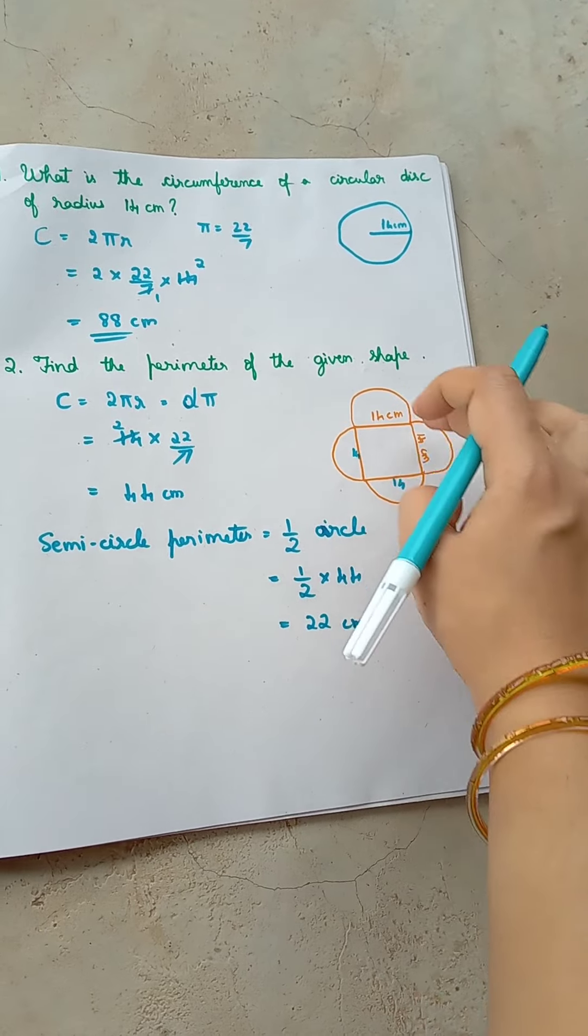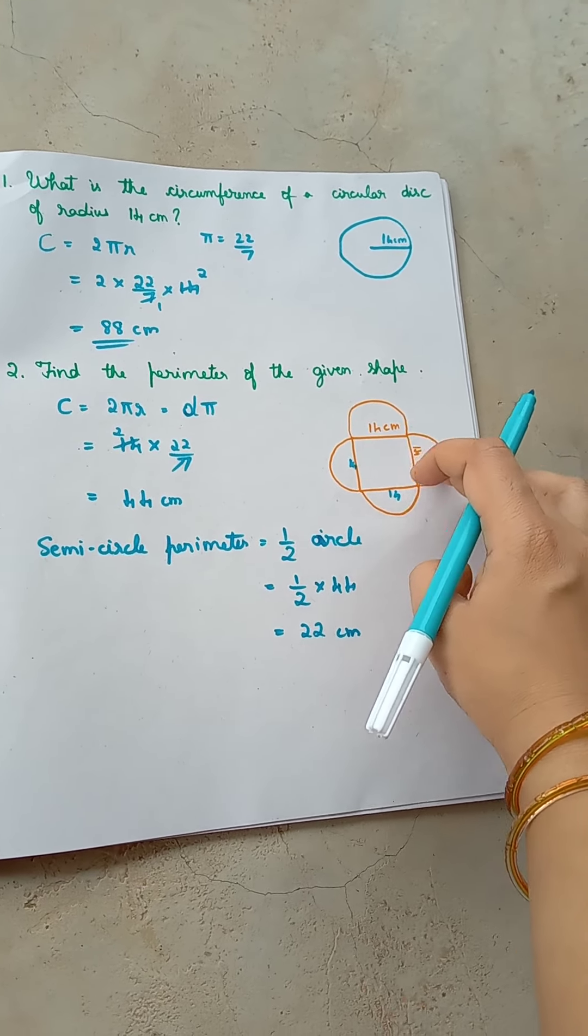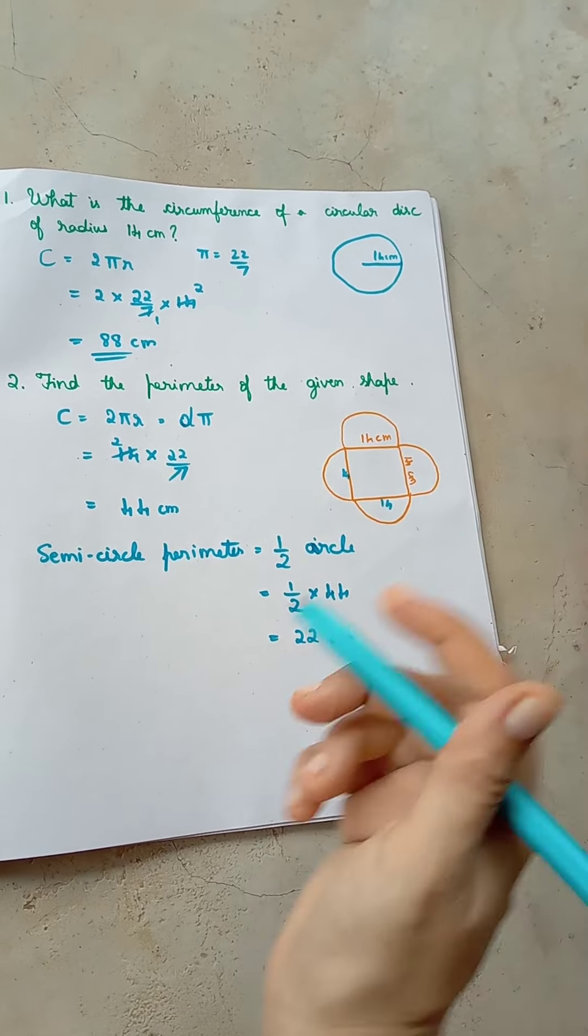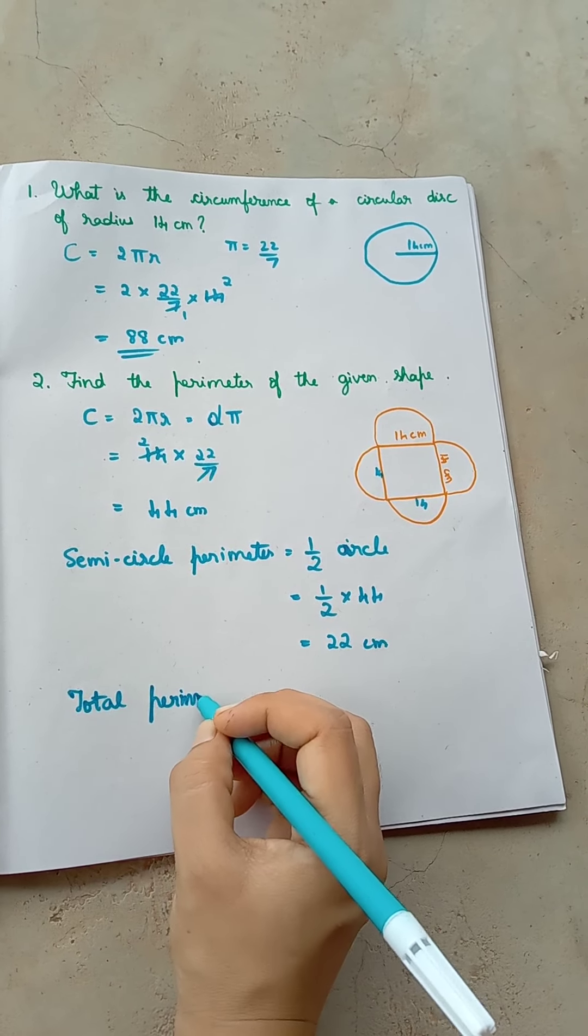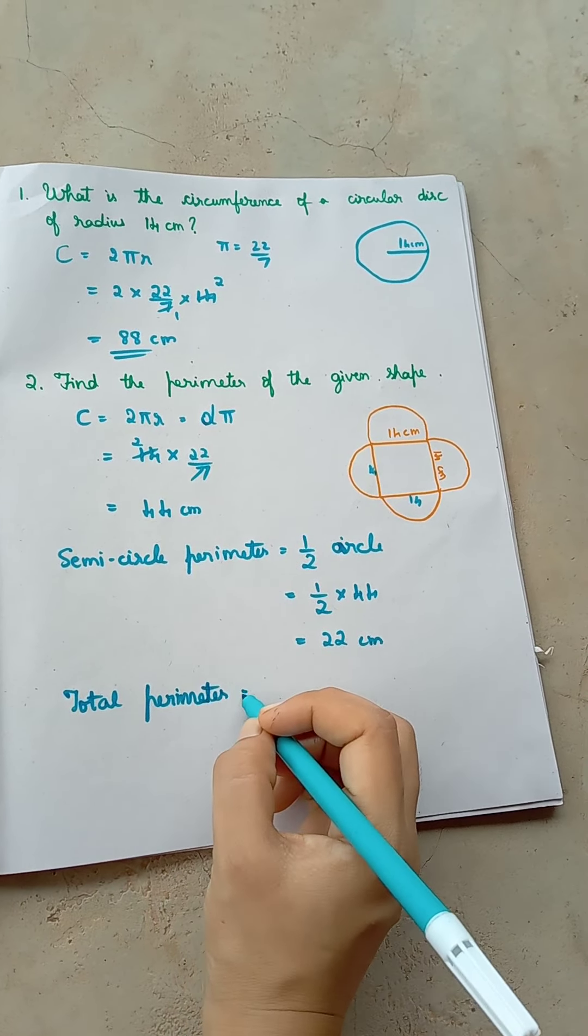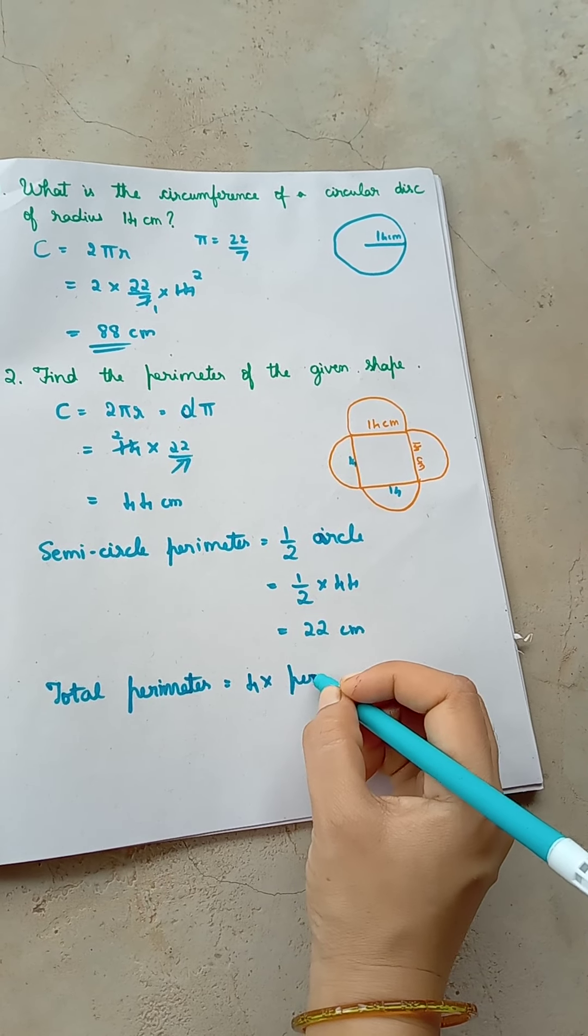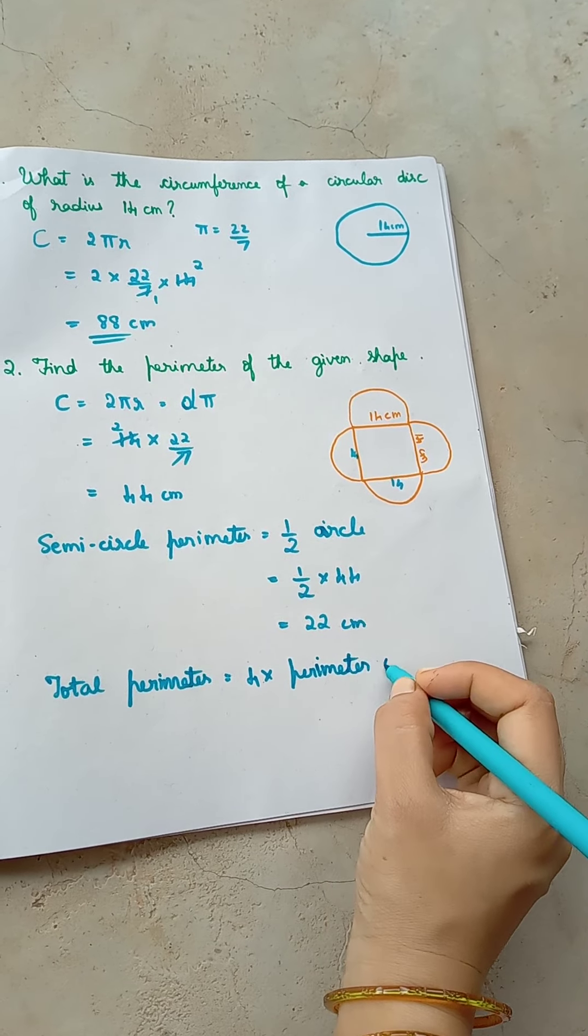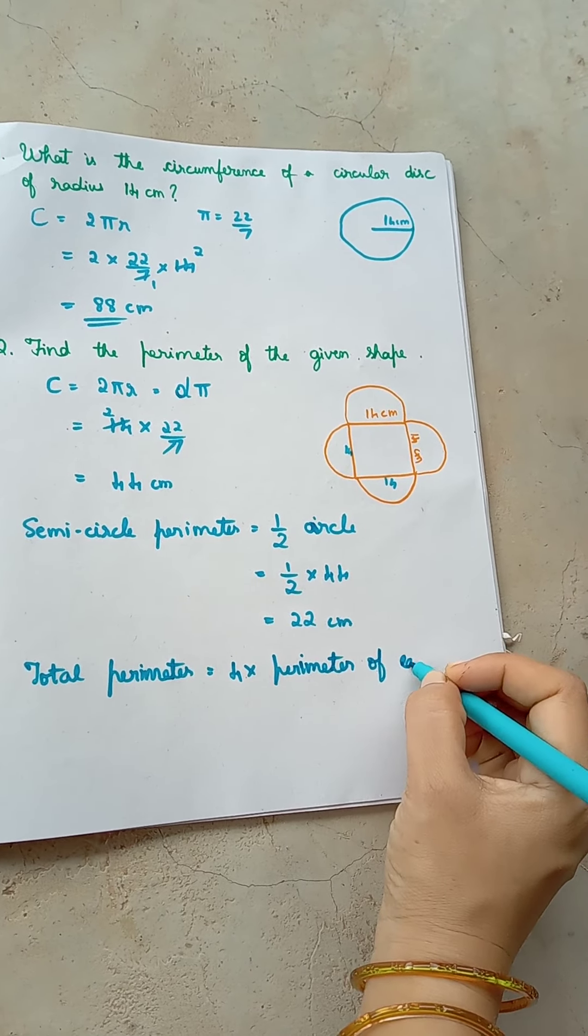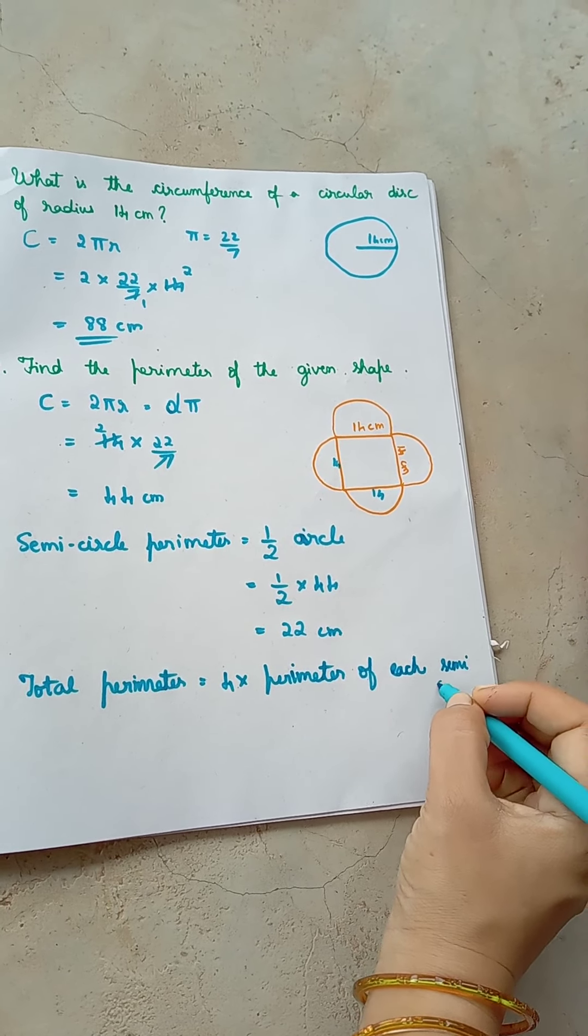Now since you have 4 semicircles, for the total perimeter you need to add perimeter of the 4 semicircles. So total perimeter equal to 4 into perimeter of each semicircle.